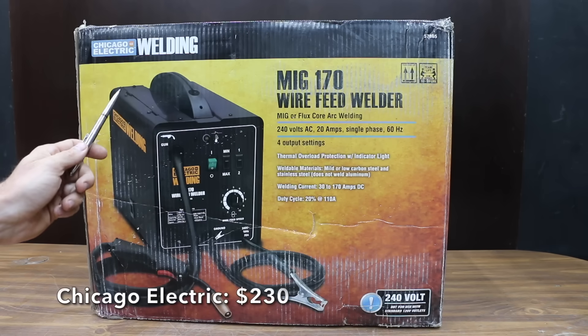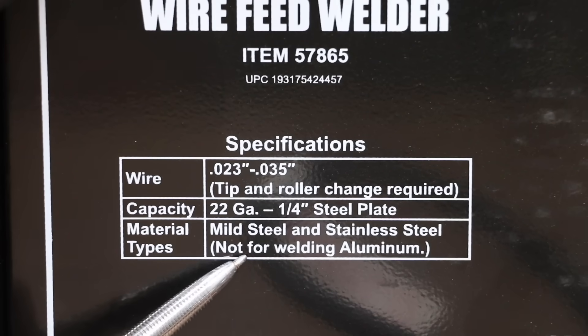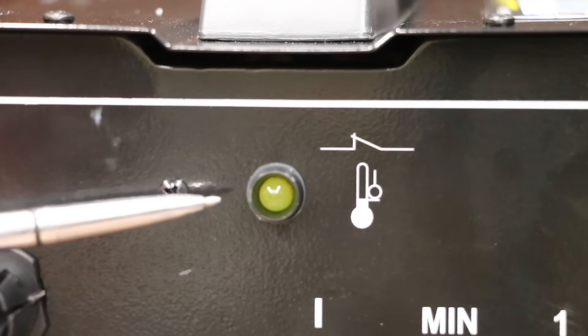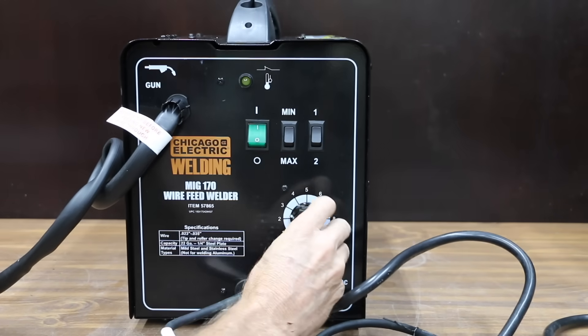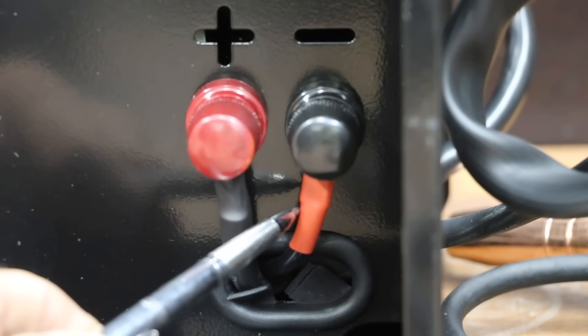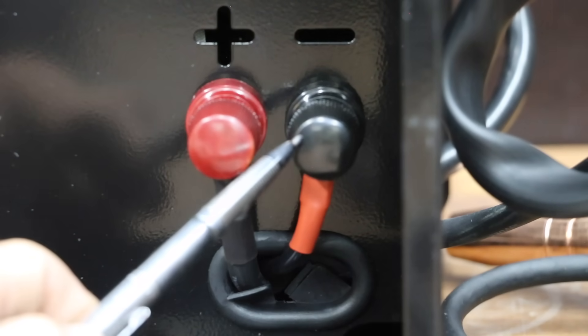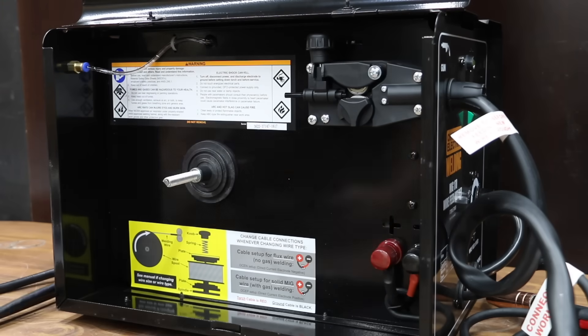At a price of $230 is this Chicago Electric MIG Welder, which is sold at Harbor Freight. Designed for MIG or flux core arc welding. Thermal overload protection with indicator light. There are basically four power settings with a high-low for levels one and two. The wire speed is controlled by a dial. For flux core welding, it's supposed to be electrode negative. The red wire is the electrode and it is electrode negative. For gas welding, it's electrode positive. The welding current is 30 to 170 amps DC.